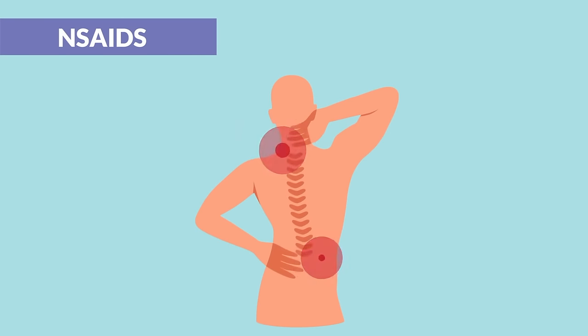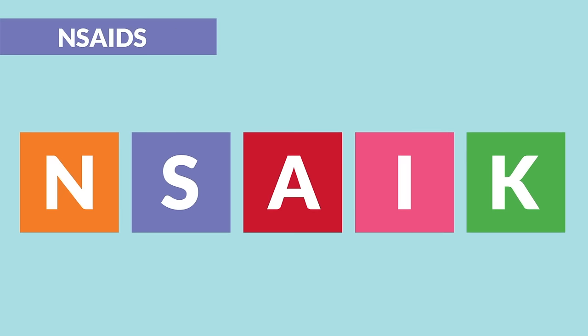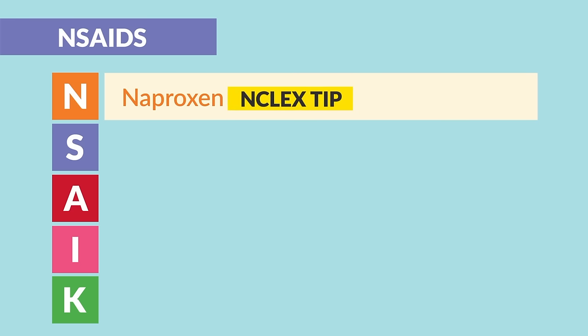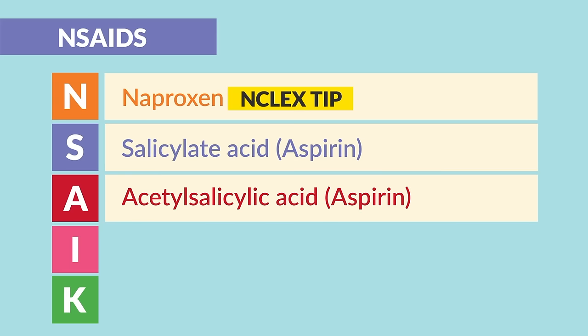Now, first up are NSAIDs, given for mild to moderate pain. We made the acronym NSEC to help you remember all the NSAID names. N is for naproxen — big Enclix tip: the number one NSAID given according to question banks. S is for salicylic acid, a.k.a. aspirin. And A is for acetyl salicylic acid — again, aspirin.